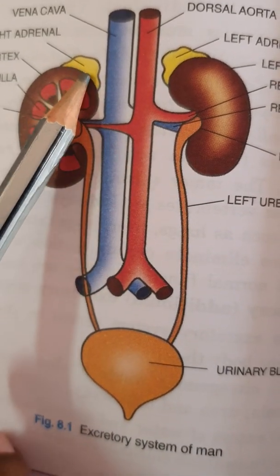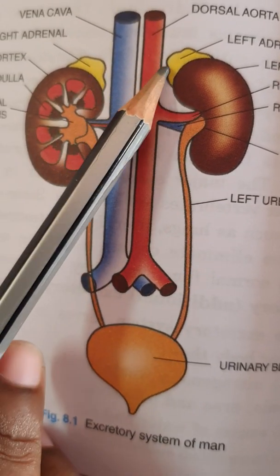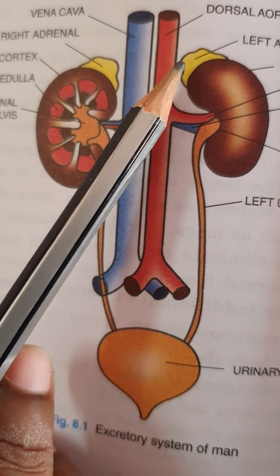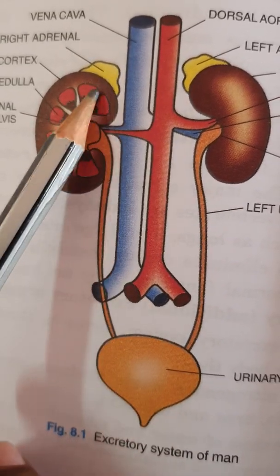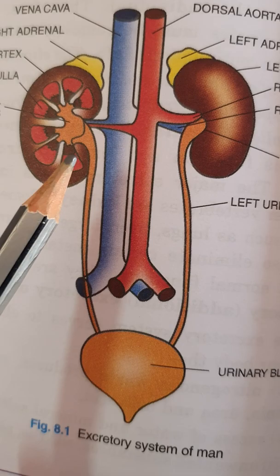The kidney is bean-shaped — one side is concave and the other side is convex. On each kidney there is an adrenal gland, which I have explained in the endocrine system.